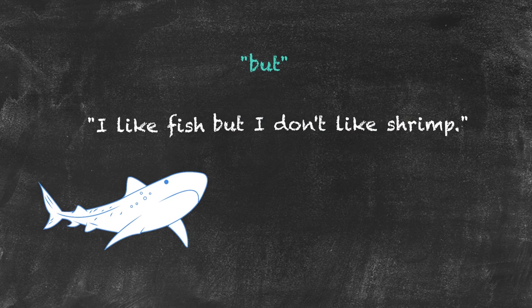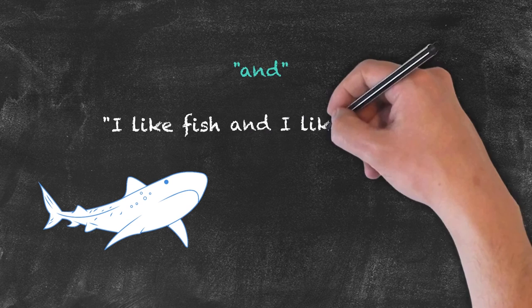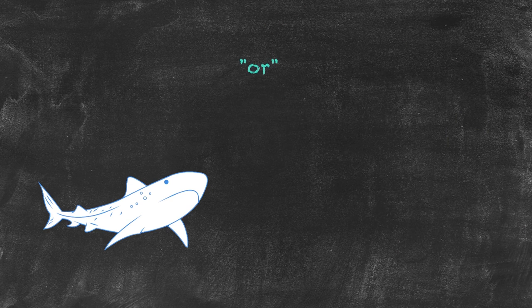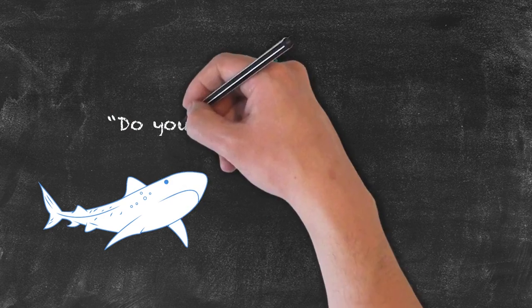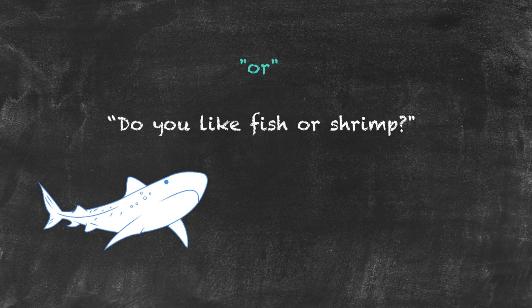If I wanted to say that I like fish and I like shrimp, I would simply say: 'I like fish and I like shrimp.' 'Or' could be used in giving choices, such as in the question: 'Do you like fish or shrimp?'